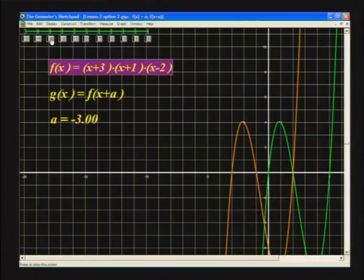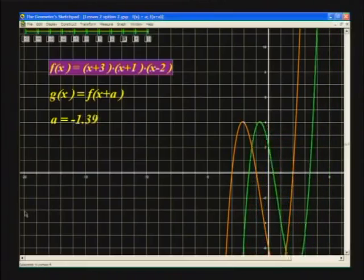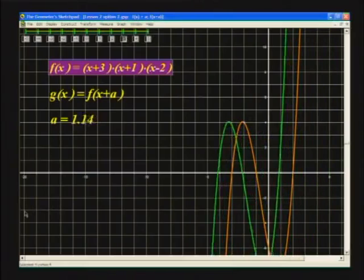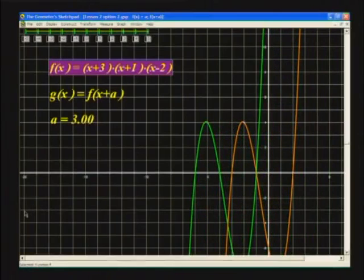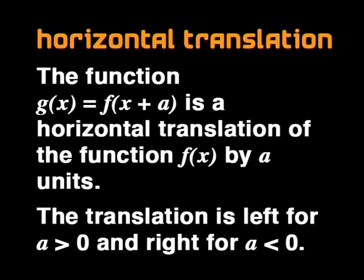What if you press three instead of minus three? Let's see. Ah, this time the graph moves in the other direction. We can summarize all that we have learned this way. The function G of X equals F of X plus A is a horizontal translation of the function F of X by A units. The translation is left for A greater than zero and right for A smaller than zero.